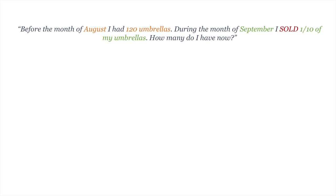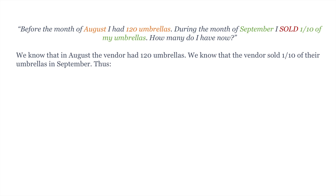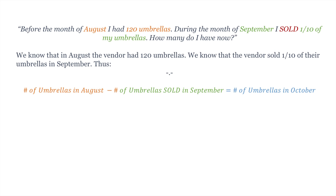Before the month of August, I had 120 umbrellas. During the month of September, I sold one-tenth of my umbrellas. How many do I have now? So we know that in August the vendor had 120 umbrellas. But we also know that the vendor sold one-tenth of their original amount of umbrellas in September. So we can write out that the number of umbrellas in August minus the number of umbrellas sold in September is equal to the number of umbrellas in October.